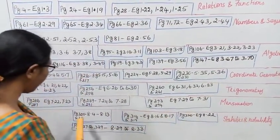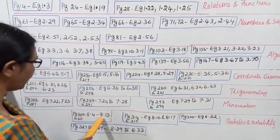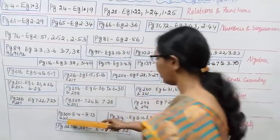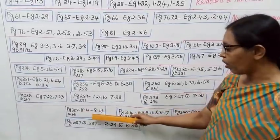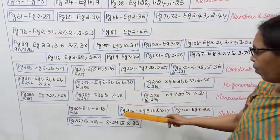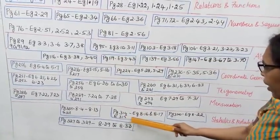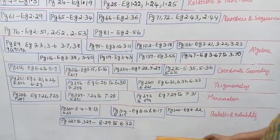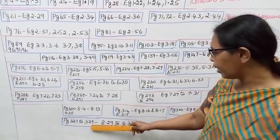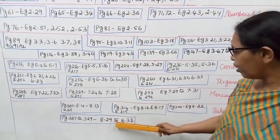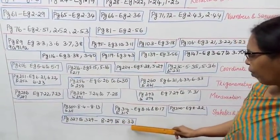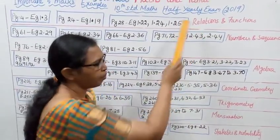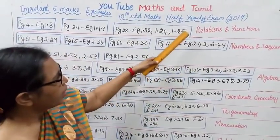Statistics and Probability: page 305, examples 8.4 and 8.13; page 305 to 311. Page 314 to 315, page 316, example 8.16; page 315, example 8.22; page 327 to 329, page 316, examples 8.23 and 8.33.